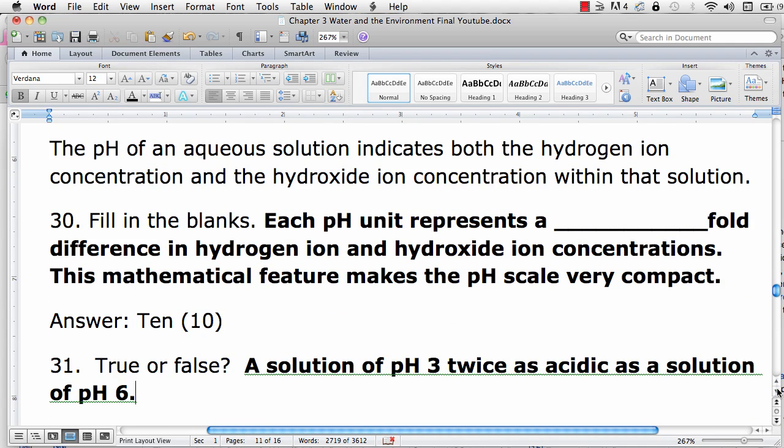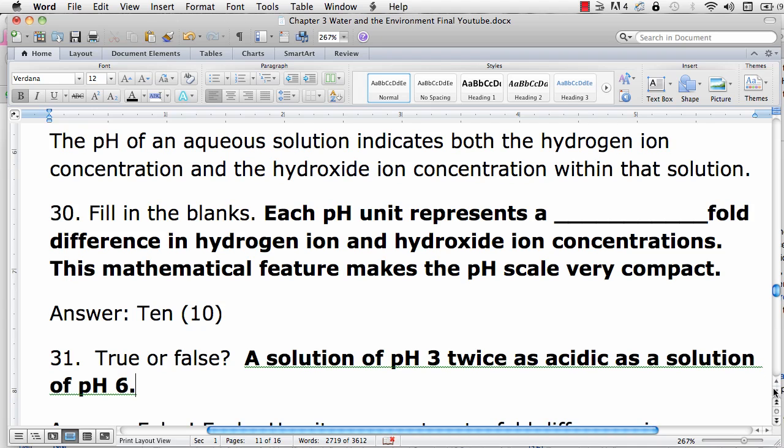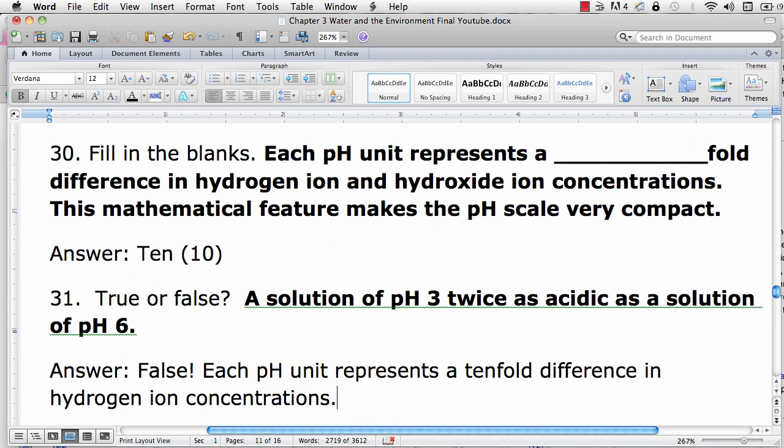Therefore, the pH of an aqueous solution indicates both the hydrogen ion concentration and the hydroxide ion concentration within that solution. Each pH unit represents a tenfold difference in hydrogen ion and hydroxide ion concentrations.